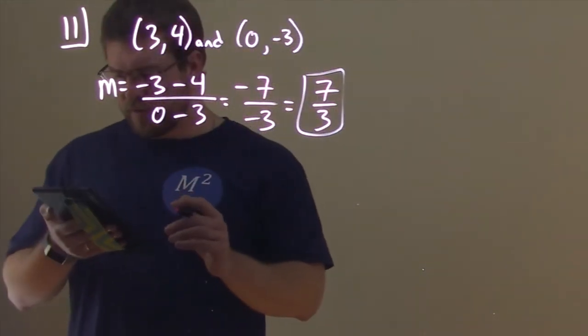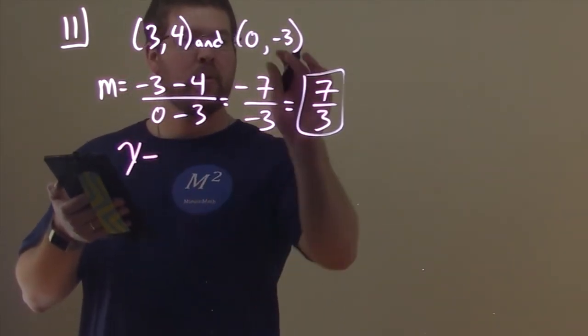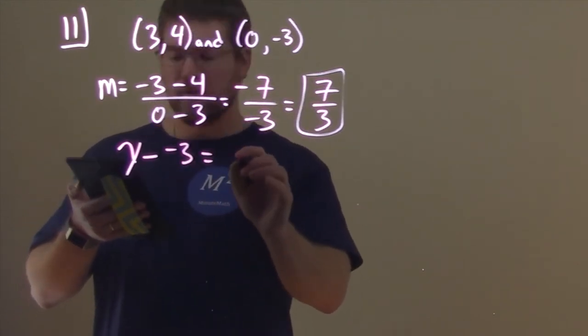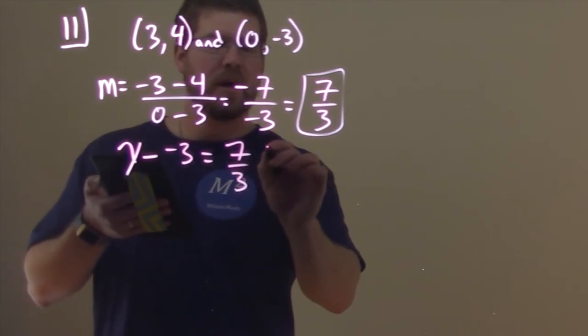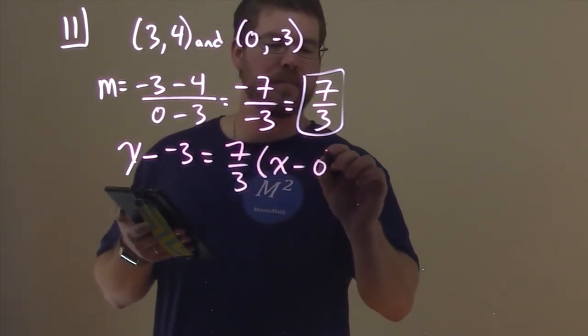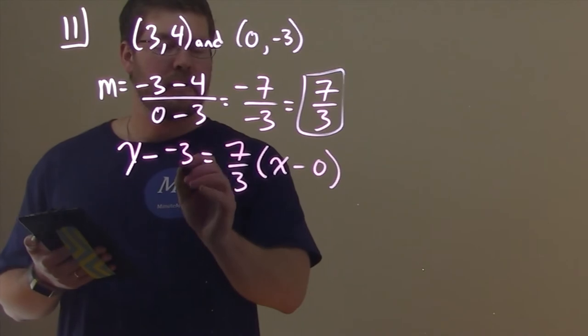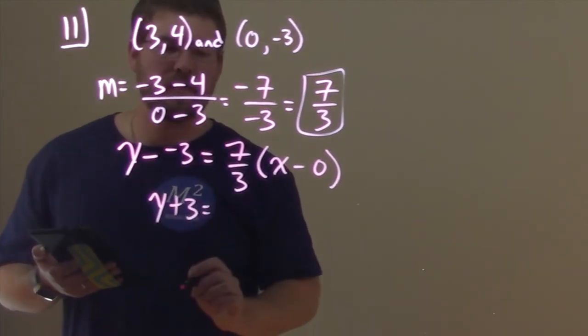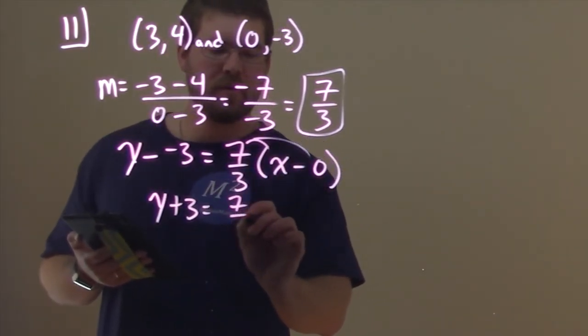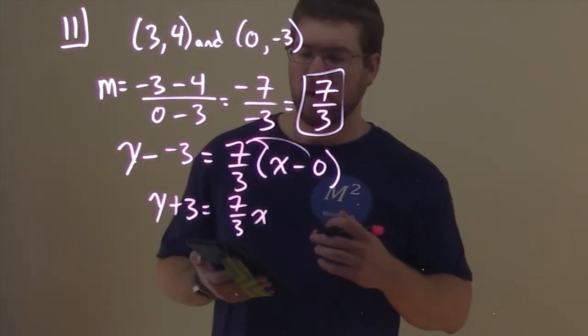So let's go try that. What was our point-slope formula? Well, that was Y minus Y1, and we'll pick this point here. So Y1 is a negative 3, equals our slope, 7 thirds, times X minus X1, which has this point, which is 0. Now watch this. Y minus a negative 3 is Y plus 3, right? Two negatives make a positive. Distribute the 7 thirds to both parts here. 7 thirds times X is 7 thirds X. But 7 thirds times the minus 0 is just 0. We don't need to write that.